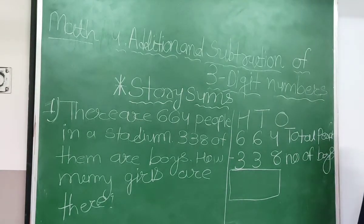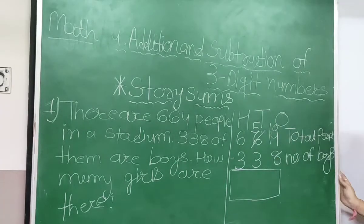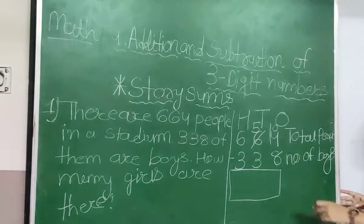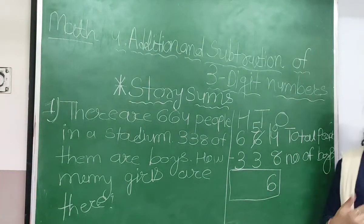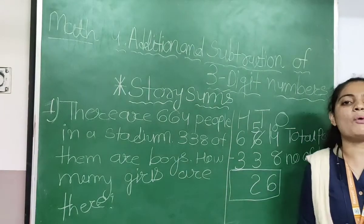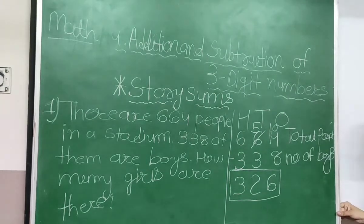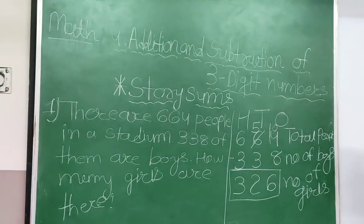4 minus 8 — smaller number minus bigger number, not possible. So we borrow from 6 — cutting 6, putting 5 over, and adding 10. So 14 will become the ones digit. 14 minus 8 — count: 9, 10, 11, 12, 13, 14. Answer will be 6. Now 5 minus 3 — count from 3: 4, 5. Answer will be 2. And 6 minus 3 — count from 3: 4, 5, 6. Answer will be 3. So the answer is 326 — that is the number of girls.